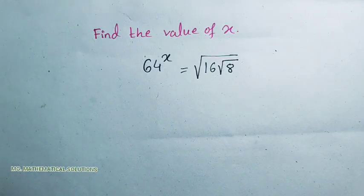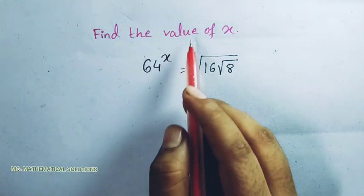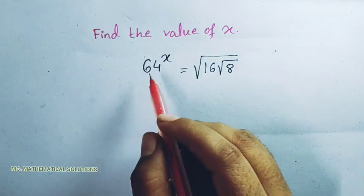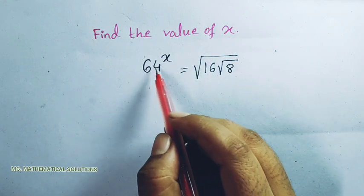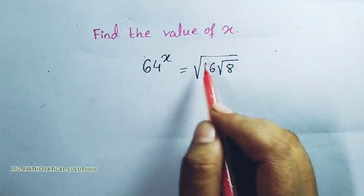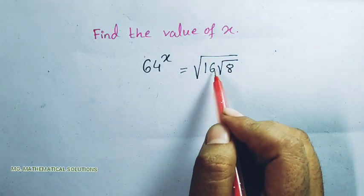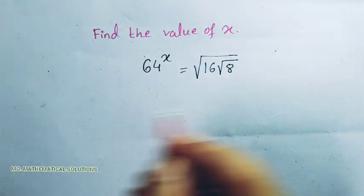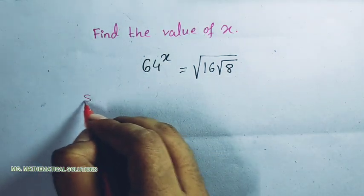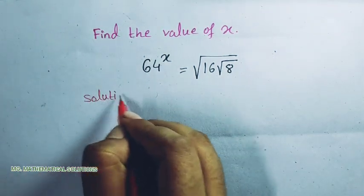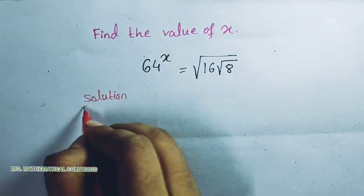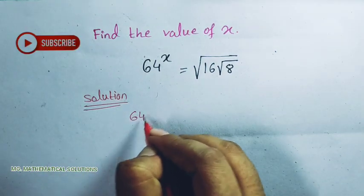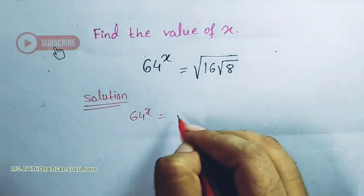Hello students, today I solve a nice algebra problem which is: find the value of x in the equation 64 to the power x equals root of 16 times root of 8. Let's see the solution. 64 to the power x equals root of 16 times root of 8.